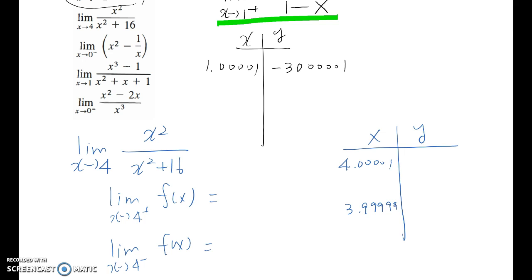Let's plug those values. So 4.00001 square over 4.00001 square plus 16, then you will get 0.5000125 like this.